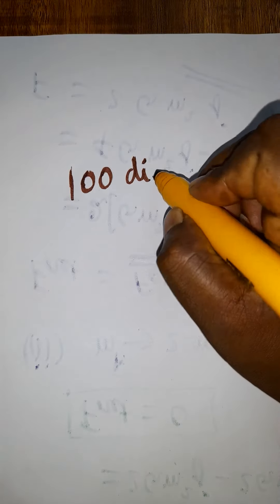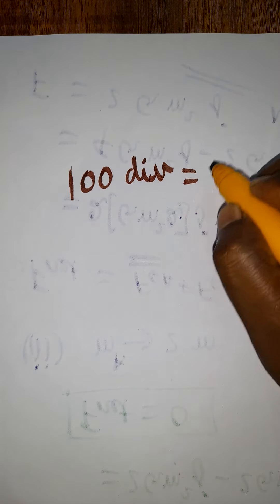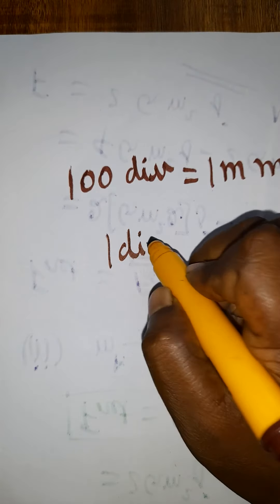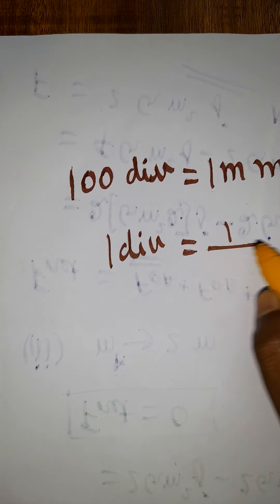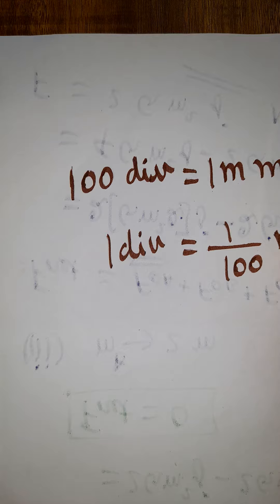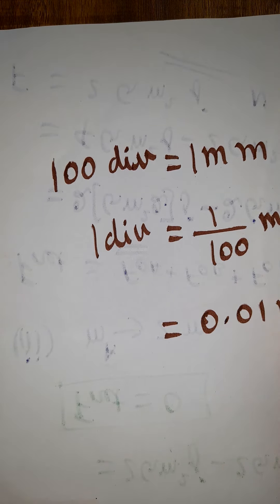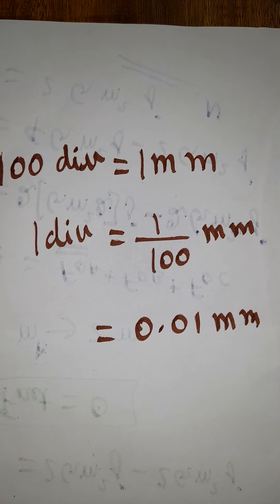100 division, it is for the 1 mm. What is 1 division? So, 1 divided by, 1 is equal to 1 divided by 100 mm. So, 0.01 mm, this is the least count of the spirometer.